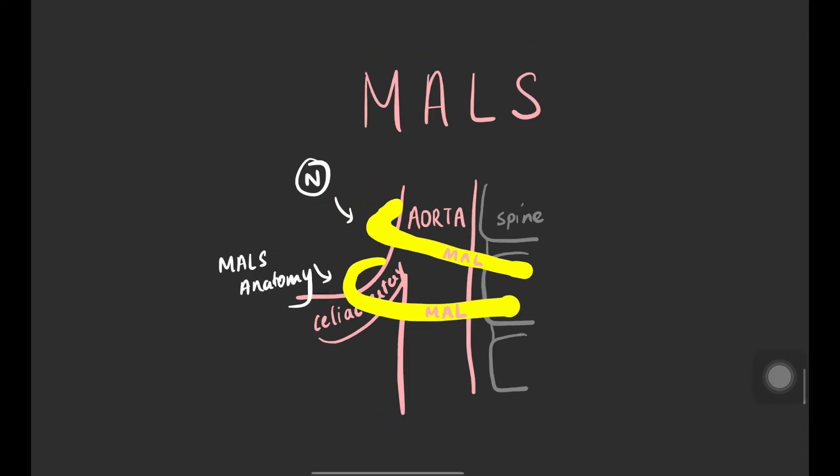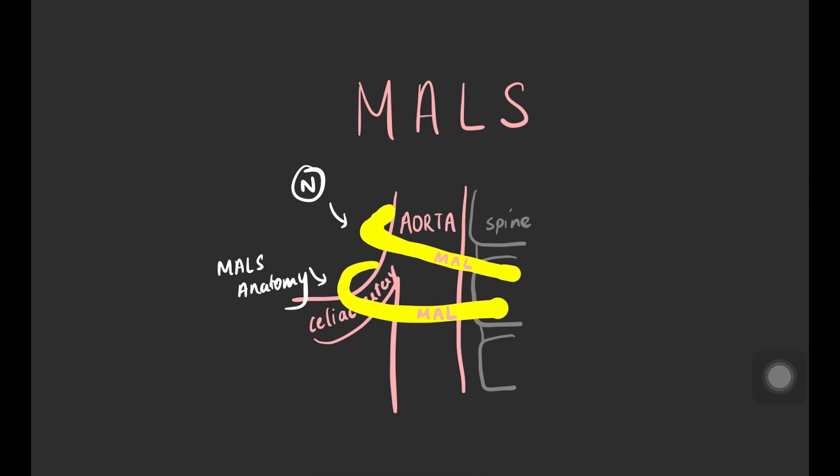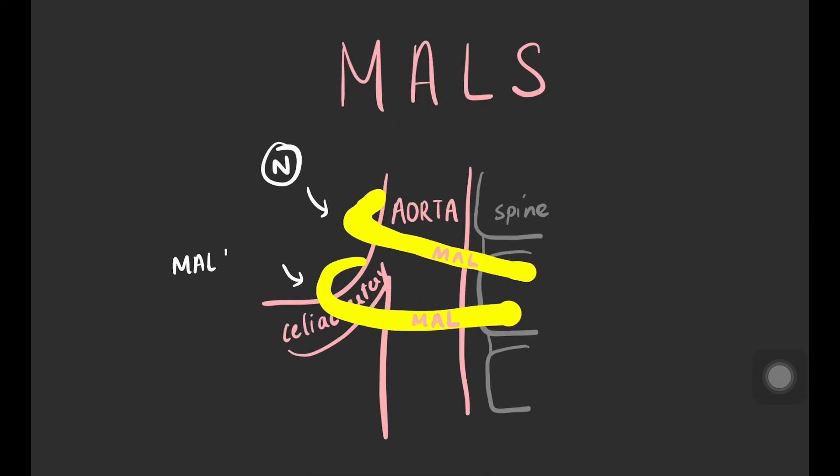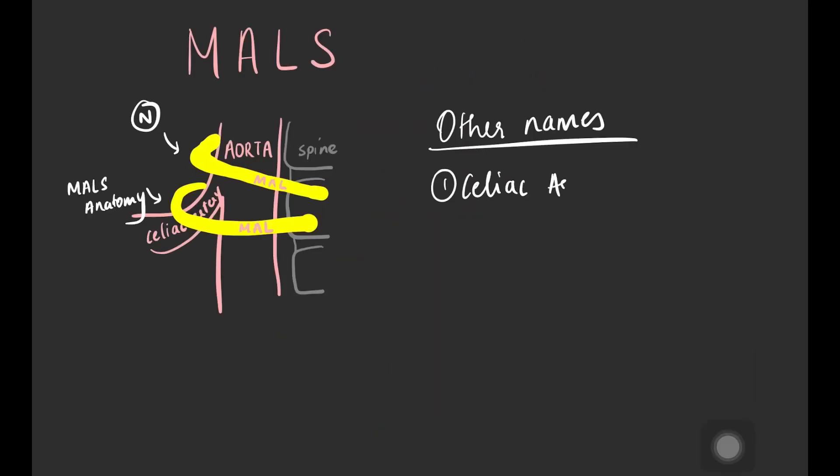It's often misdiagnosed and ultimately confirmed by vascular imaging. Other names for median arcuate ligament syndrome include celiac artery compression, celiac axis syndrome, or Dunbar syndrome. Treatment involves surgery to release the ligament and restore blood flow through the artery.